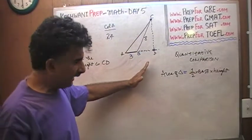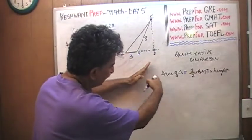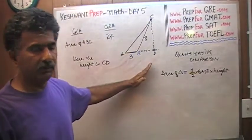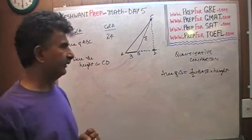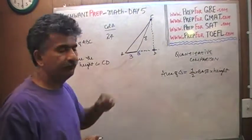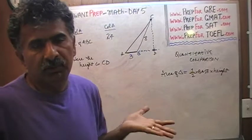The height is the straight distance, perpendicular distance from the highest point to the base. That's what's called height. Do we know what that distance is from C to D? The answer is no. We do not know what the height is.